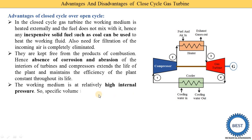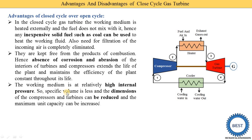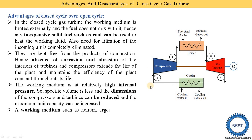The third advantage is that the working medium is at a relatively high internal pressure, so specific volume is less. At the inlet of the compressor, the pressure is above atmospheric, whereas in an open cycle the pressure is atmospheric. Because of this higher pressure, the specific volume is less, the dimensions of the compressors and turbines can be reduced, and the maximum unit capacity can be increased.